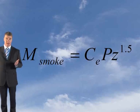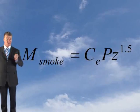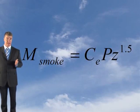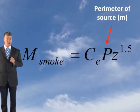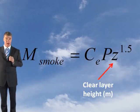Here is the model available for the near field axisymmetric plume: M_smoke equals C_E, which is the coefficient of entrainment, times P, which is the perimeter of the source, times Z to the power of 1.5, which is the clear layer height. To apply this model, you need to determine which coefficient to apply.